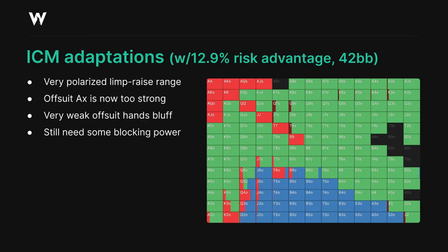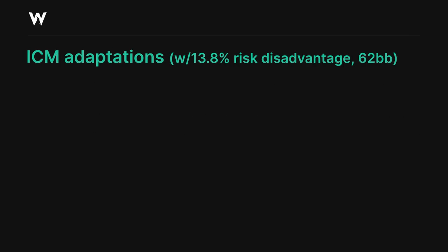Our offsuit bluffing hands are even weaker than they were in chip EV — the offsuit aces are now almost too strong to use as bluffs — but we're still bluffing at a good rate, and our value range is restricted to ace-jack plus and pocket 9s plus, since the big blind won't be jamming over our limp 3-bet with a wide range.